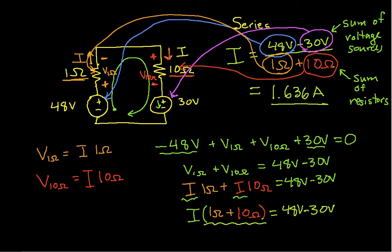Having computed I, I can now go back and compute the voltage across the 1 ohm resistor. V 1 ohm is going to be I times 1, so this is going to be 1.636 volts. V 10 ohms is going to be I times 10, so this is going to be 16.36 volts. That's pretty much everything we can compute in this circuit.